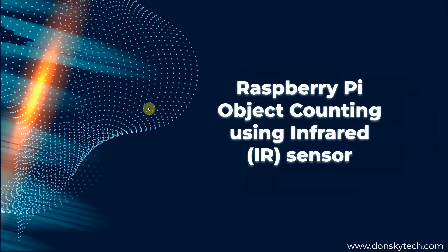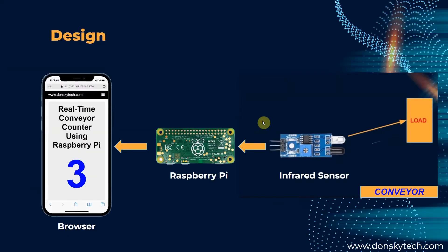Welcome to Don's Key Tech. In this video, we're going to show how we can use the Raspberry Pi as an object counter by using the infrared IR sensor. IR sensors are excellent electronic components that can sense the proximity of objects, and we will use it in counting objects that are passing through in our mini conveyor system.